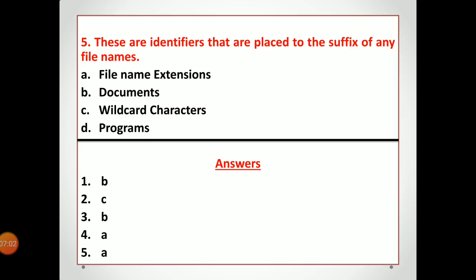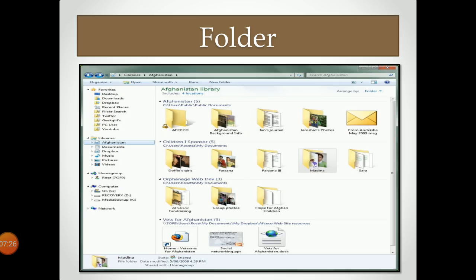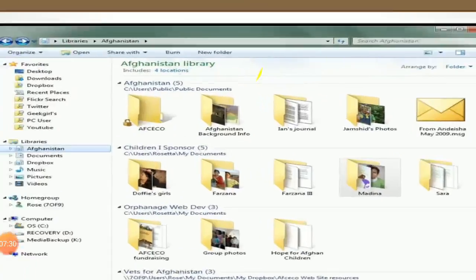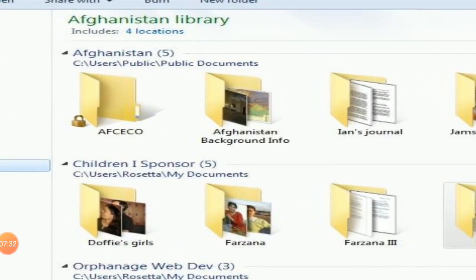So the answers are: first question B, second C, third B, fourth A, and fifth is A — File Name Extensions. File name extensions like .exe and .mp3 are all file name extensions.